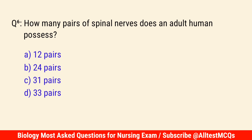Q6. How many pairs of spinal nerves does an adult human possess? The correct answer is C: 31 pairs.